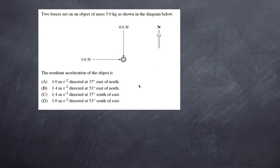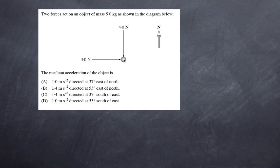Now let's look at the next question. We have an object of mass five kilograms experiencing two forces: one towards the east and one towards the south — one is three newtons and one is four newtons. You have to work out the resultant acceleration. I'll give you a moment to try it out.